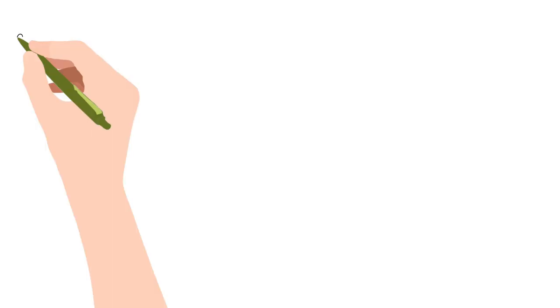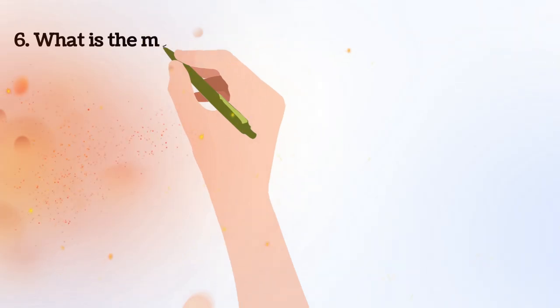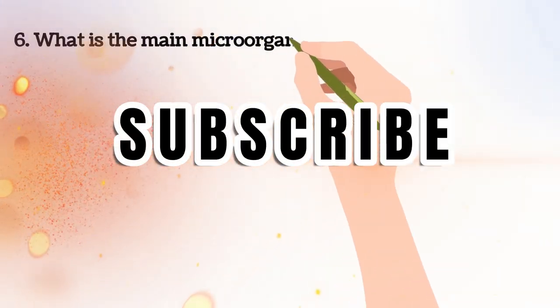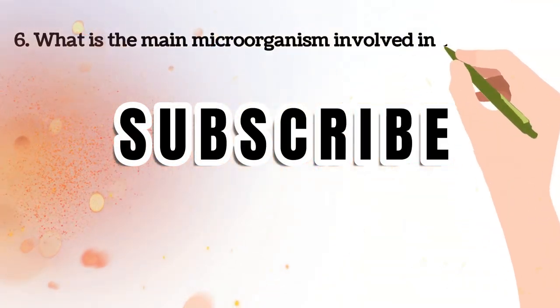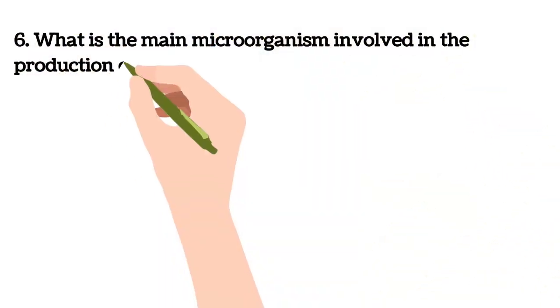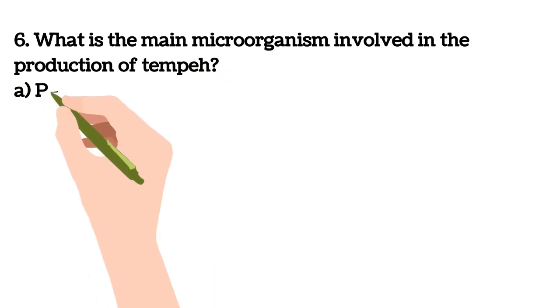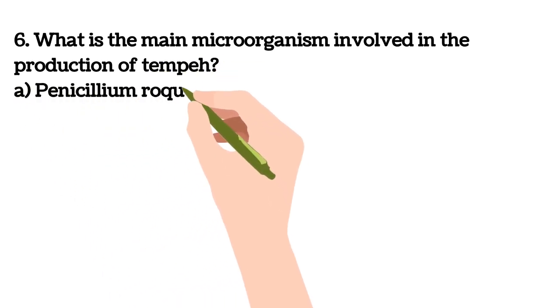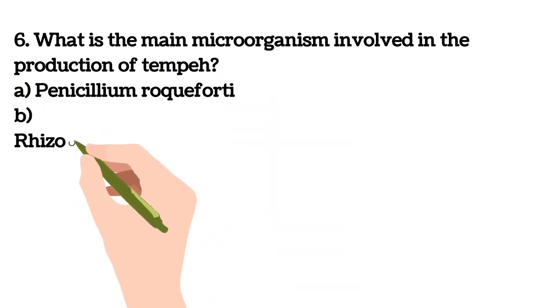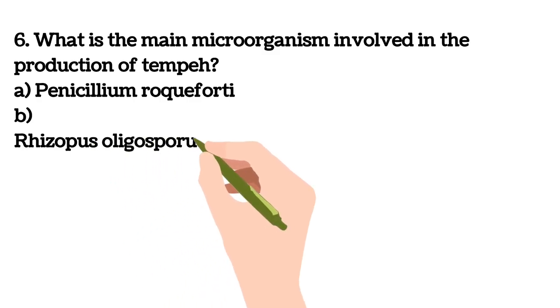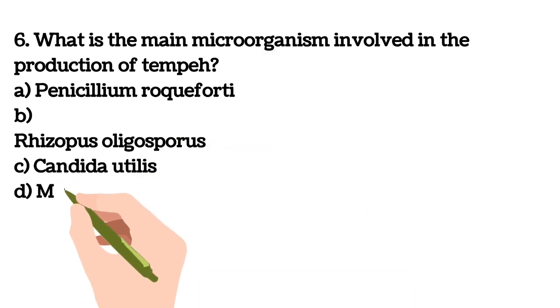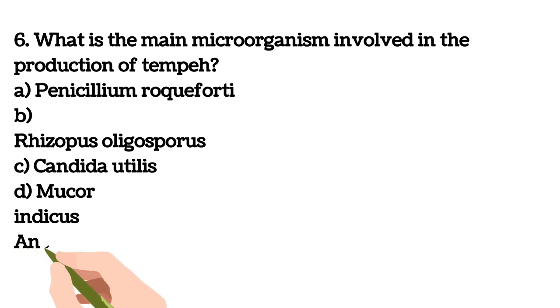Sixth question: what is the main microorganism involved in the production of tempeh? A) Penicillium roqueforti, B) Rhizopus oligosporus, C) Candida utilis, D) Mucor indicus. Your answer is B, Rhizopus oligosporus.